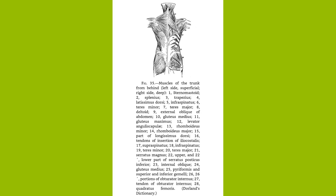The blood supply in the cervical region and about the shoulders comes from the branches of the subclavian artery, such as the suprascapular and the transversalis colli. Lower down, the supply comes from the posterior branches of the intercostals, dorsal branches of the lumbar, and branches of the internal iliac. The muscles of the back are supplied by the spinal nerves, the spinal accessory also going to the trapezius muscle. End of chapter 6.